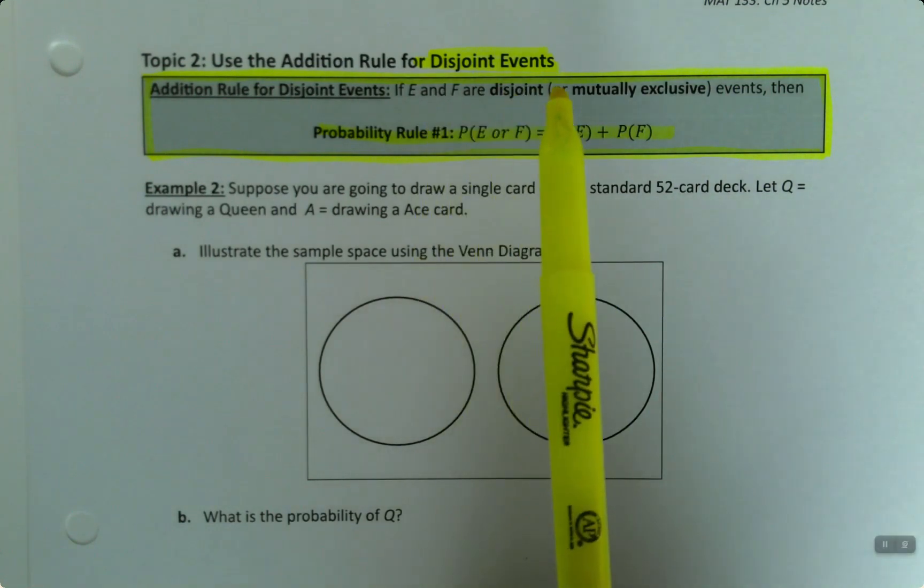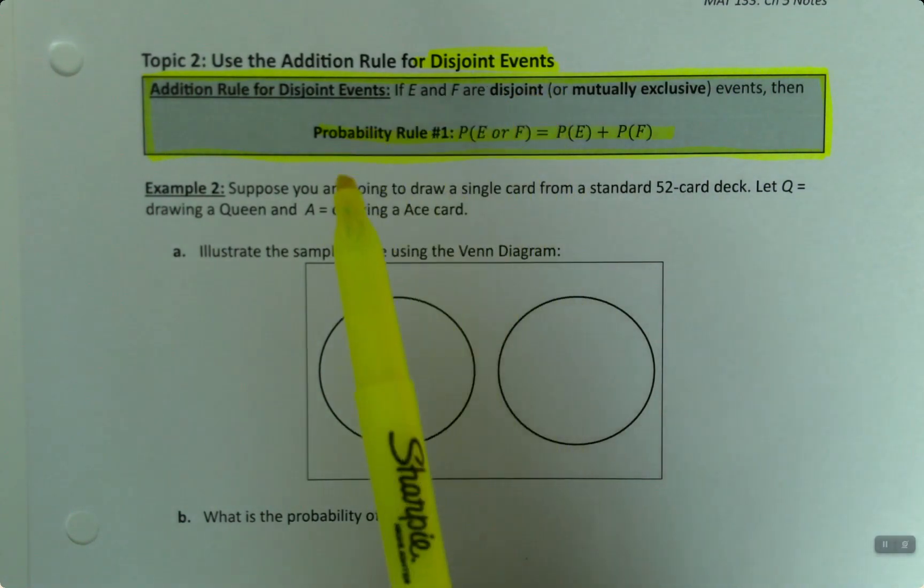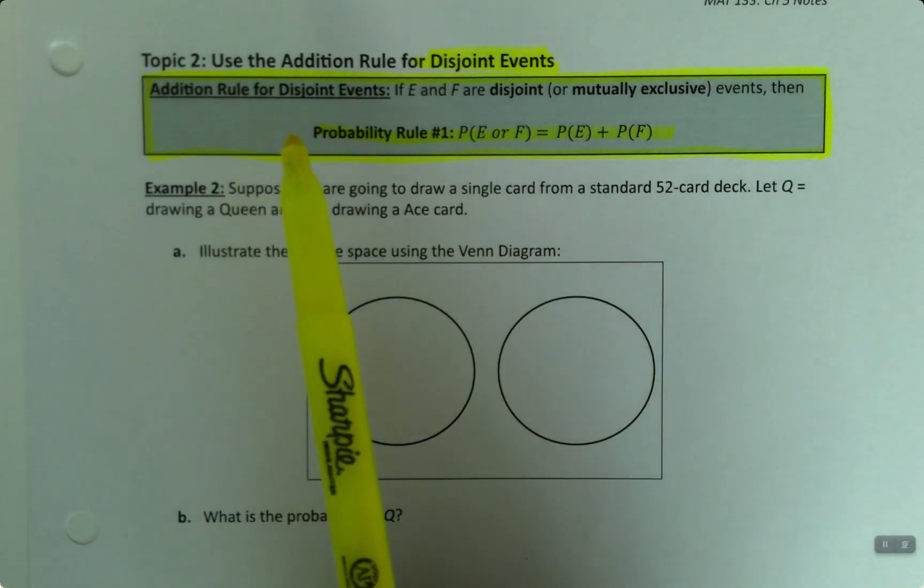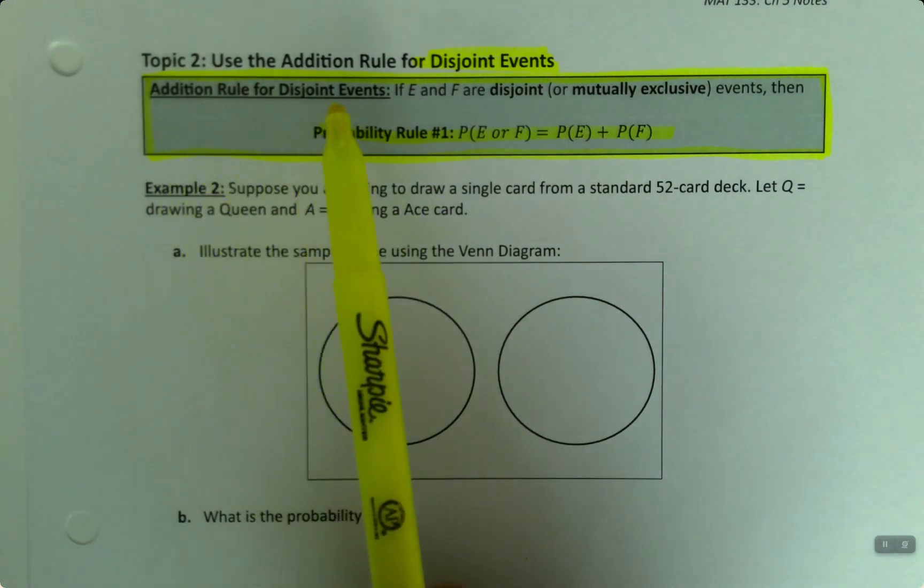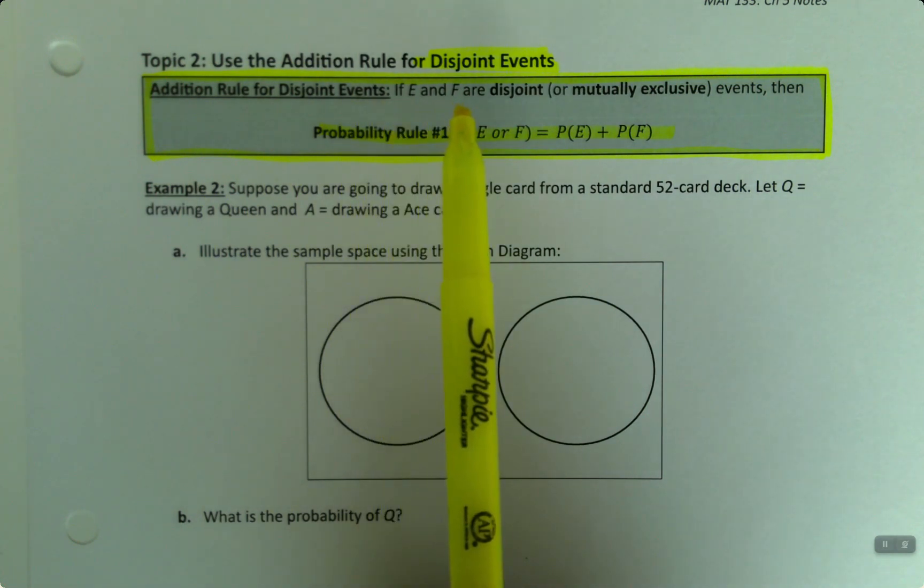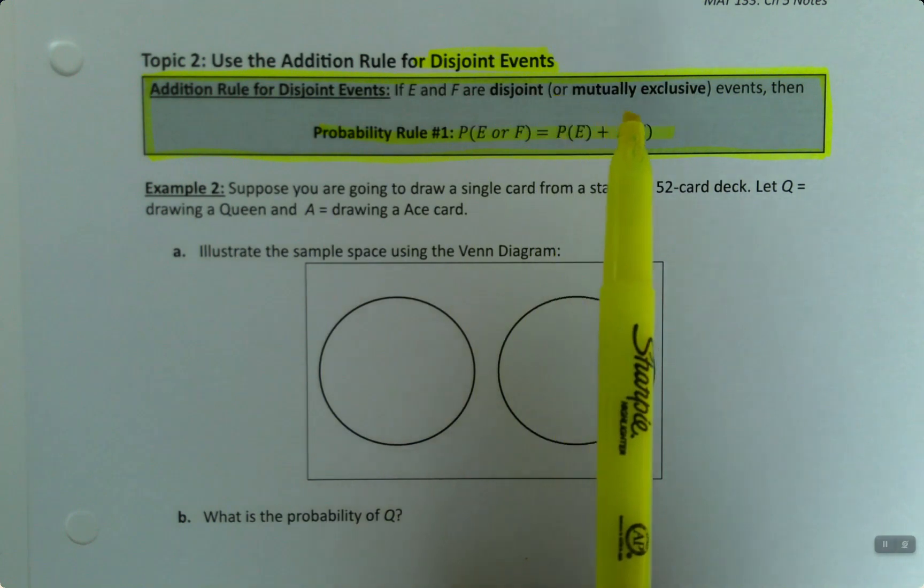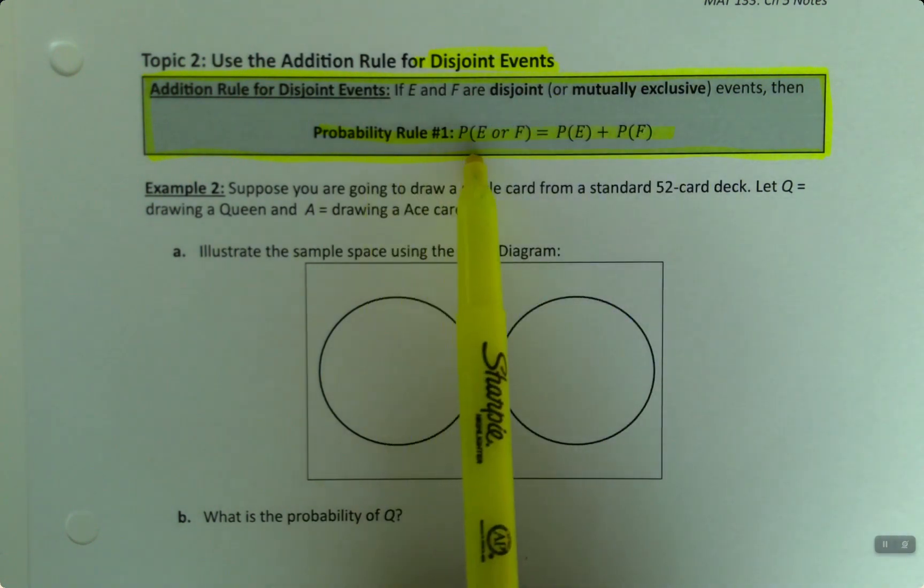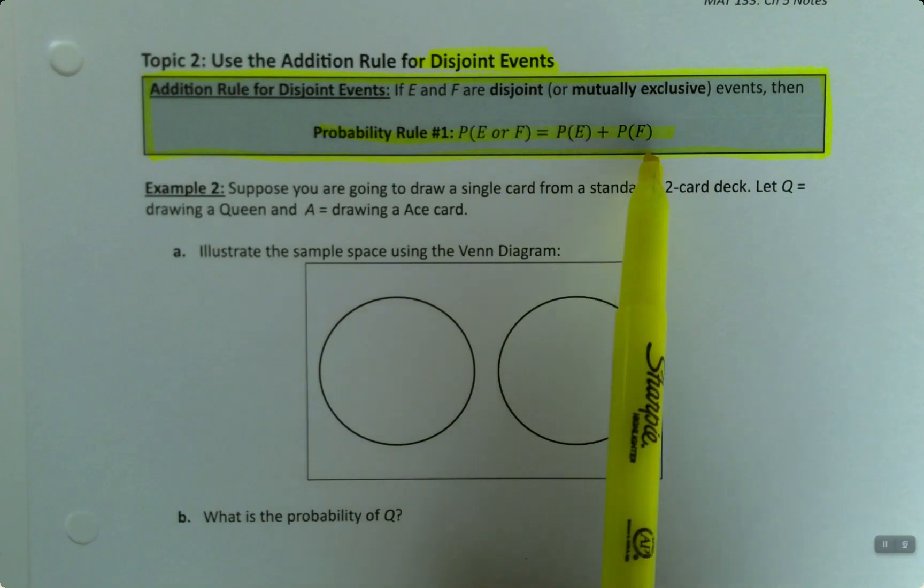So we've learned what disjoint events are, and now we want to see how that affects probability. This leads us to our first probability rule, which is the addition rule for disjoint events.